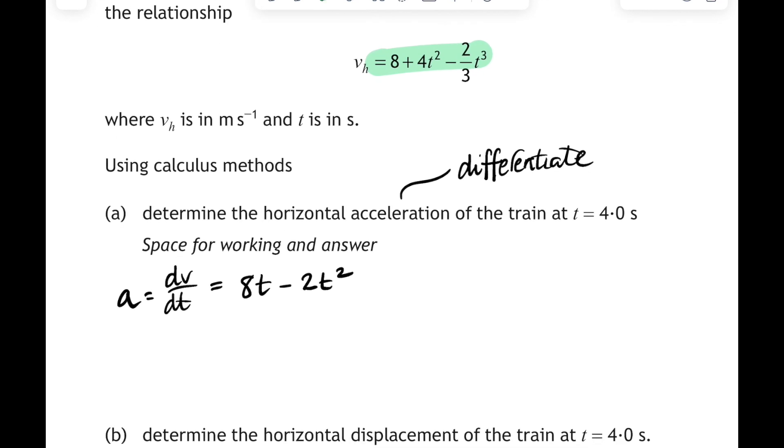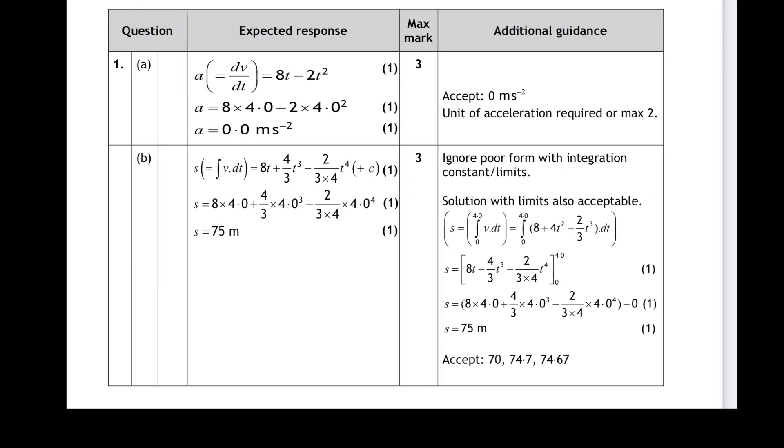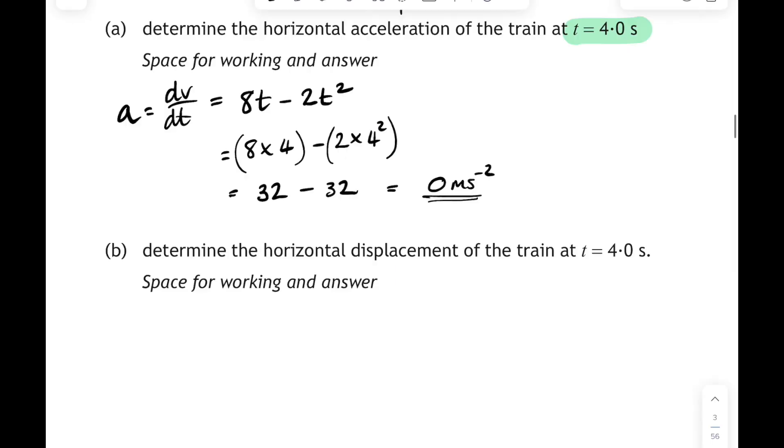Then we're going to sub in for t equals 4 seconds. So, 8 times 4 minus 2 times 4 squared. And if you do that in your calculator, it gives you an answer of, surprise, surprise, 0 meters per second squared. Now, don't forget your units there. Because if we have a look at the SQA marking instructions, notice on the right-hand side there it says, unit of acceleration required, or maximum 2 marks. You would only get 2 marks there for the differentiation and the substitution. You need the unit.